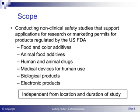This slide shows the scope of GLPs. They regulate all non-clinical safety studies that support or are intended to support applications for research or marketing permits for products regulated by the FDA or by similar national legislation. This includes medicinal and veterinary drugs, aroma and color additives in food, nutrition supplements, and livestock and biological products. The duration of the study is of no importance, nor is where the study is performed. If a sponsor subcontracts part of a GLP study to a subcontractor, they have to comply in the same way.